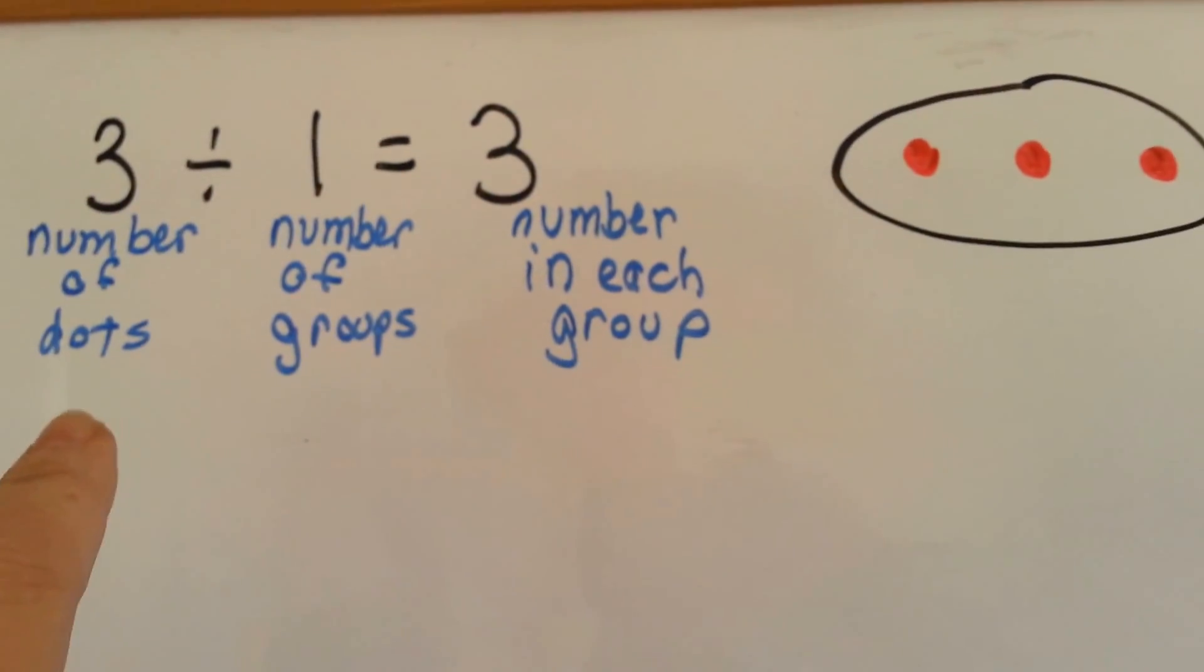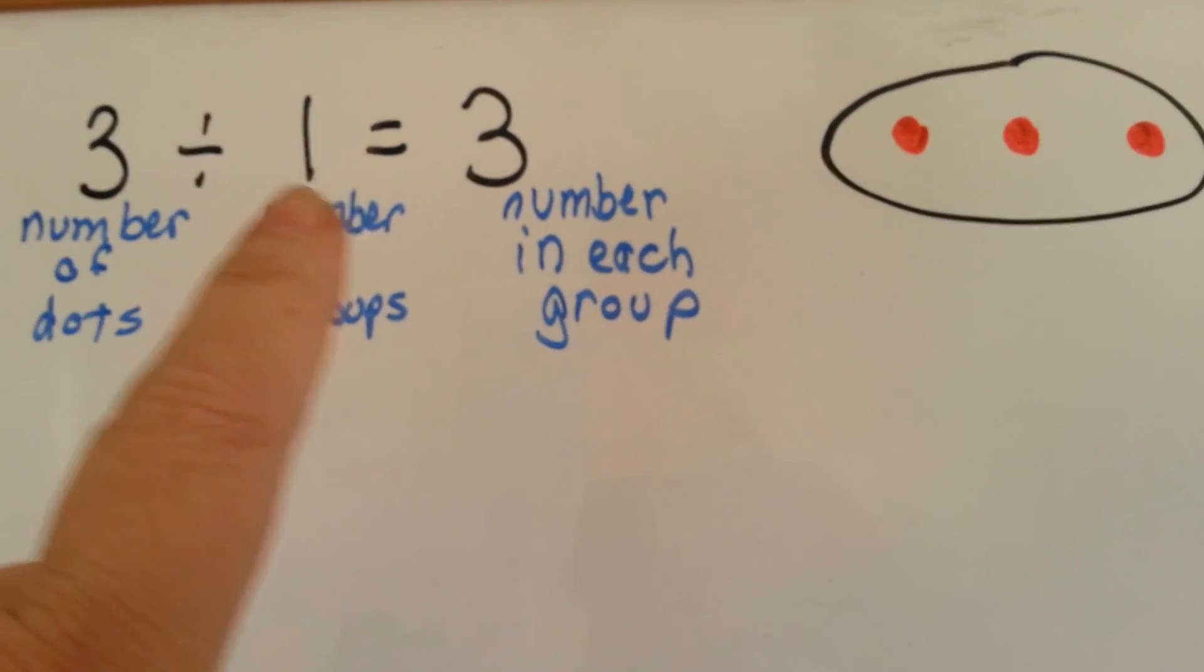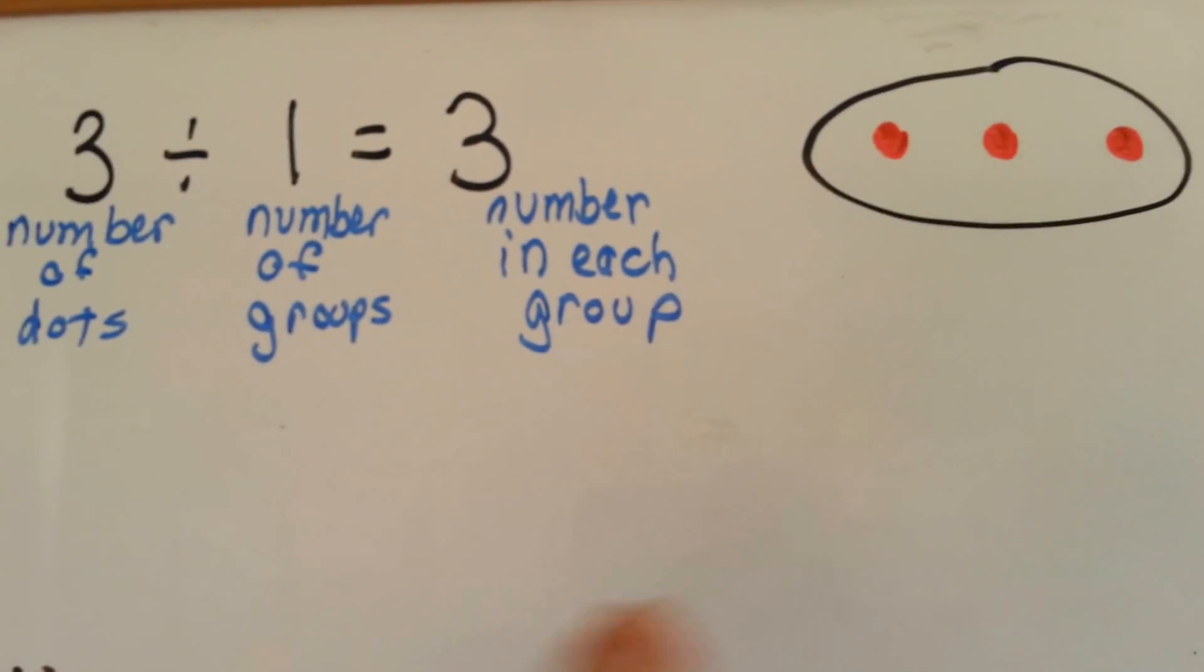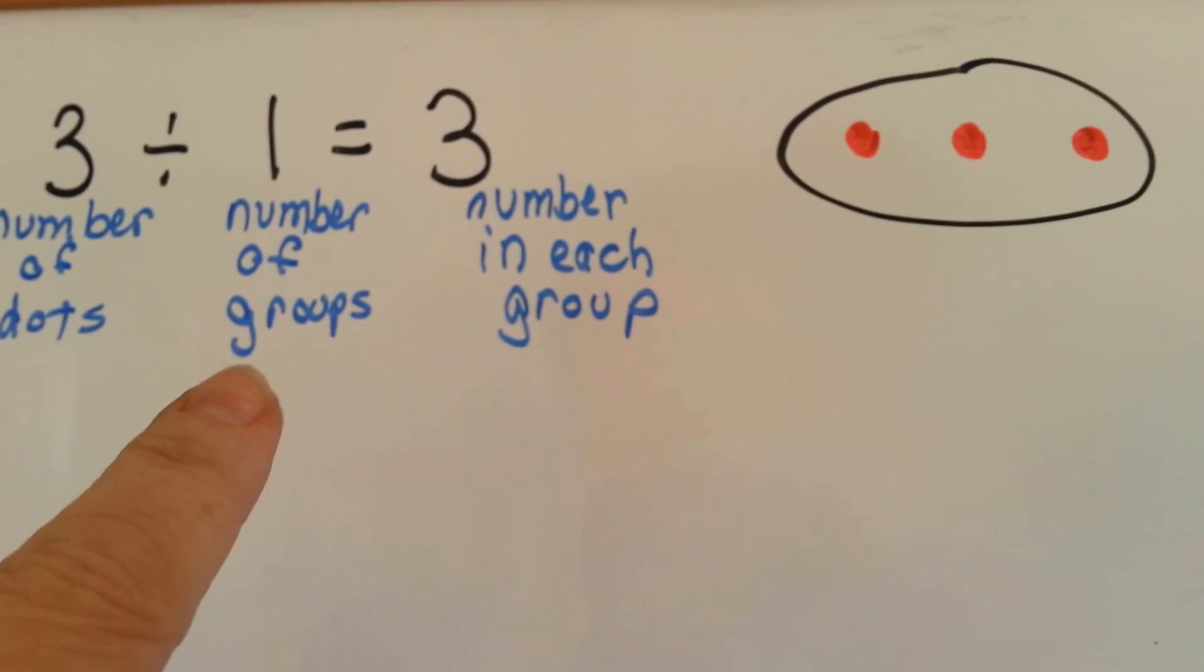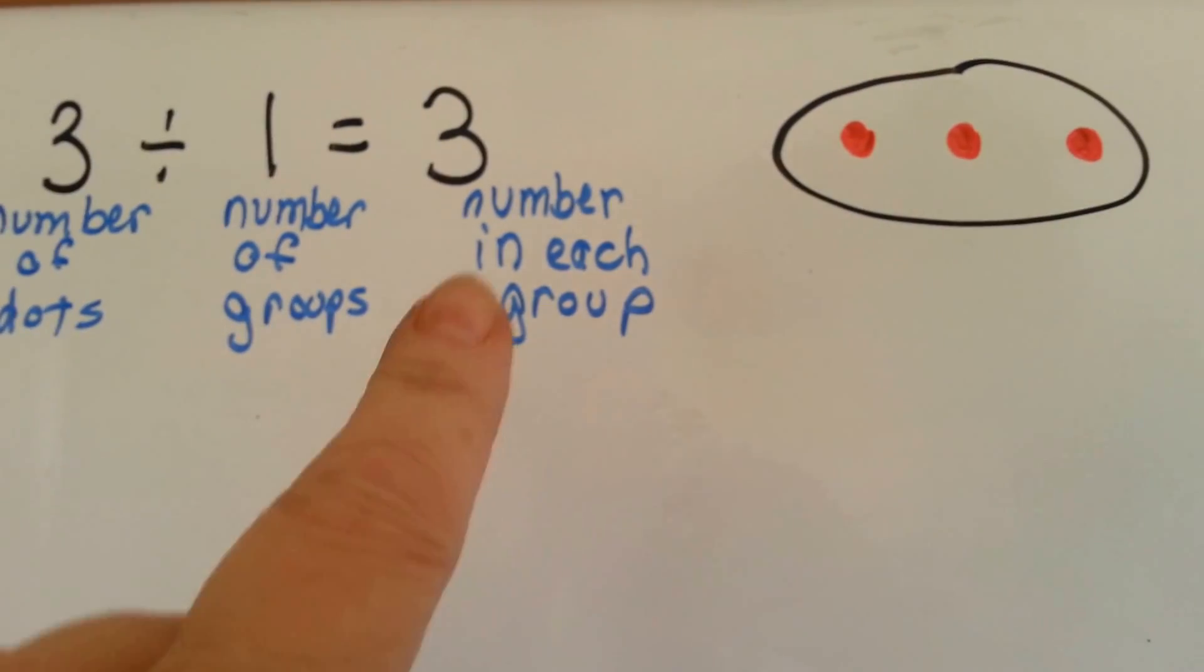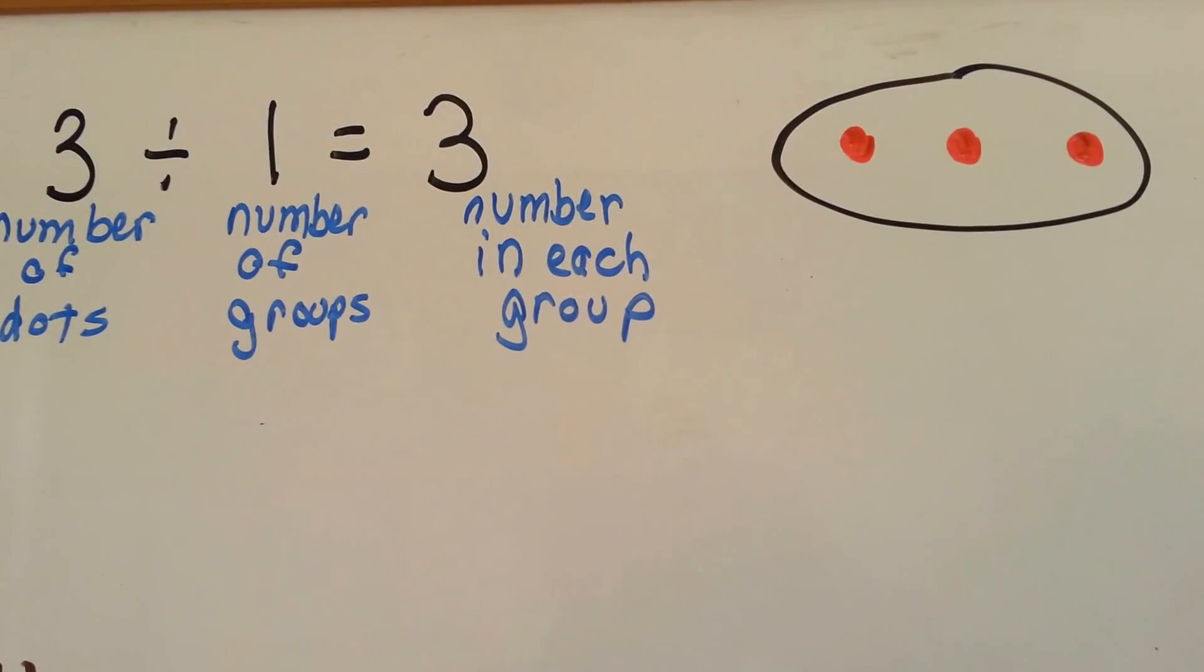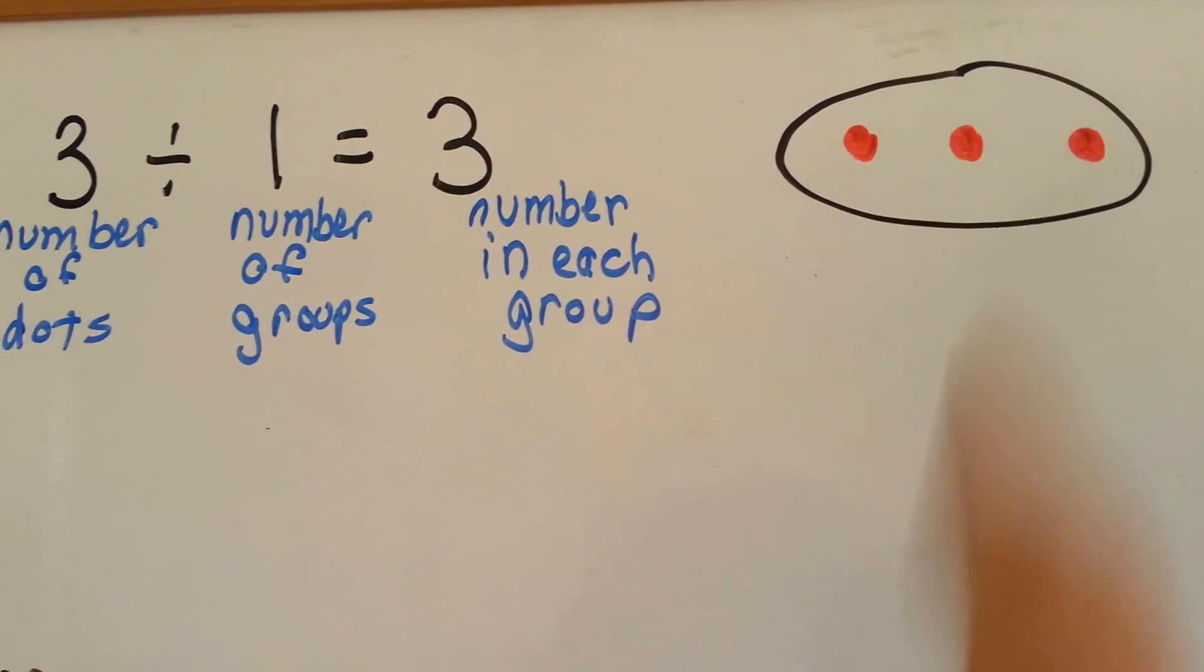First, I want you to look at this division problem. 3 divided by 1 equals 3. 3 is the number of dots we have. The 1 is the number of groups we have, and this 3 is the number that is in each group. So we have one group of 3.